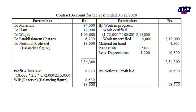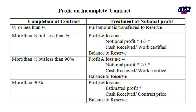The balance of $18,600 is our notional profit. The debit side carries down the notional profit, and it is brought down on the credit side as $18,600. We will discuss how much to transfer to the profit and loss account. When the contract is less than 25% complete, we reserve the full amount. When between 25% and 50%, the formula is notional profit × 1/3 × (cash received / work certified).